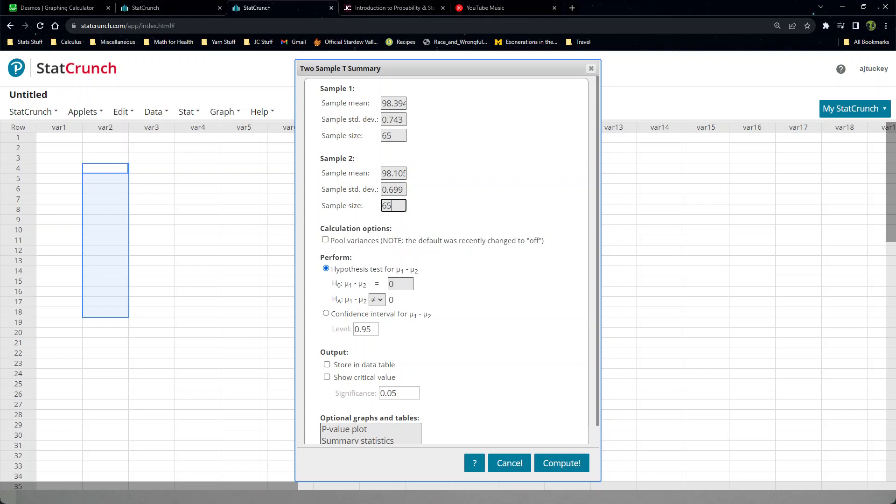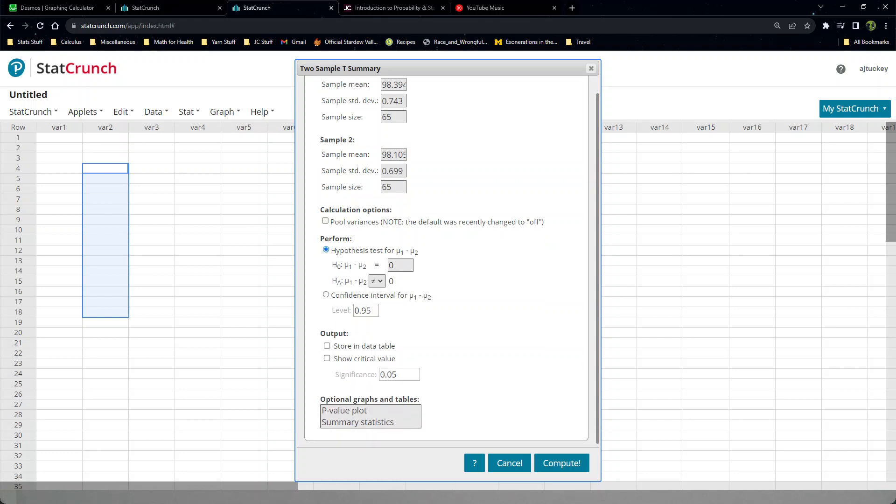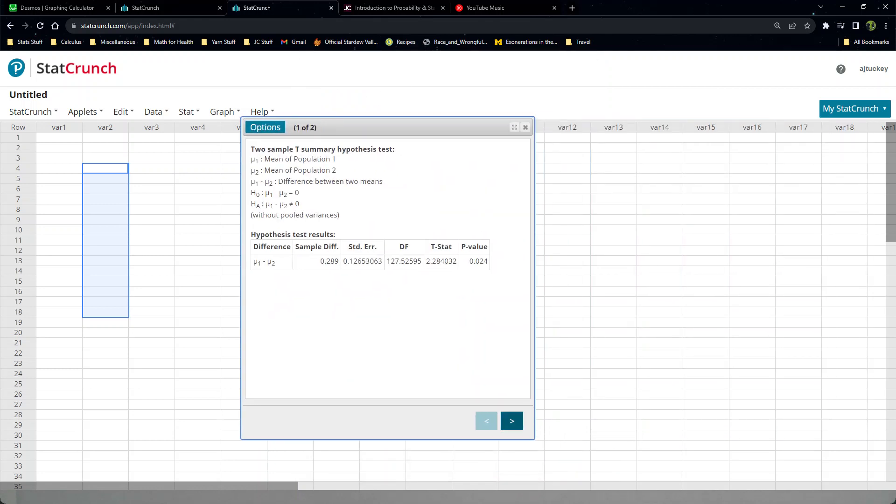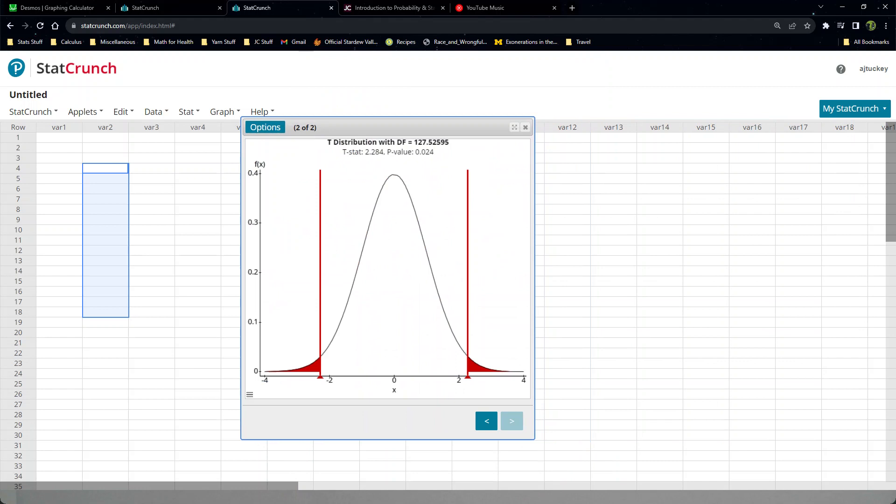Now we're running a hypothesis test. See how StatCrunch writes it as μ1 minus μ2 equals 0 and μ1 minus μ2 is not equal to 0, which is exactly what we want. We want to make sure we click the P-value plot because that's how we're going to get step 4 done for us. We say Compute, and the picture has everything we need because you can see the t stat. The t stat is 2.284; it says it right there at the top, and then we can see our picture.